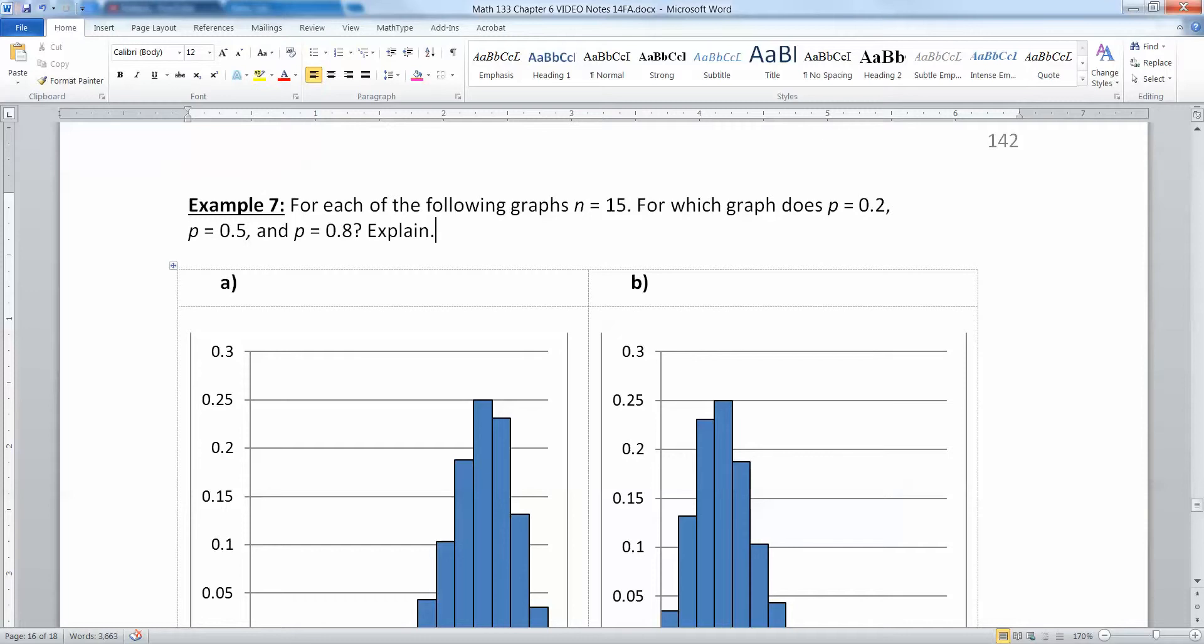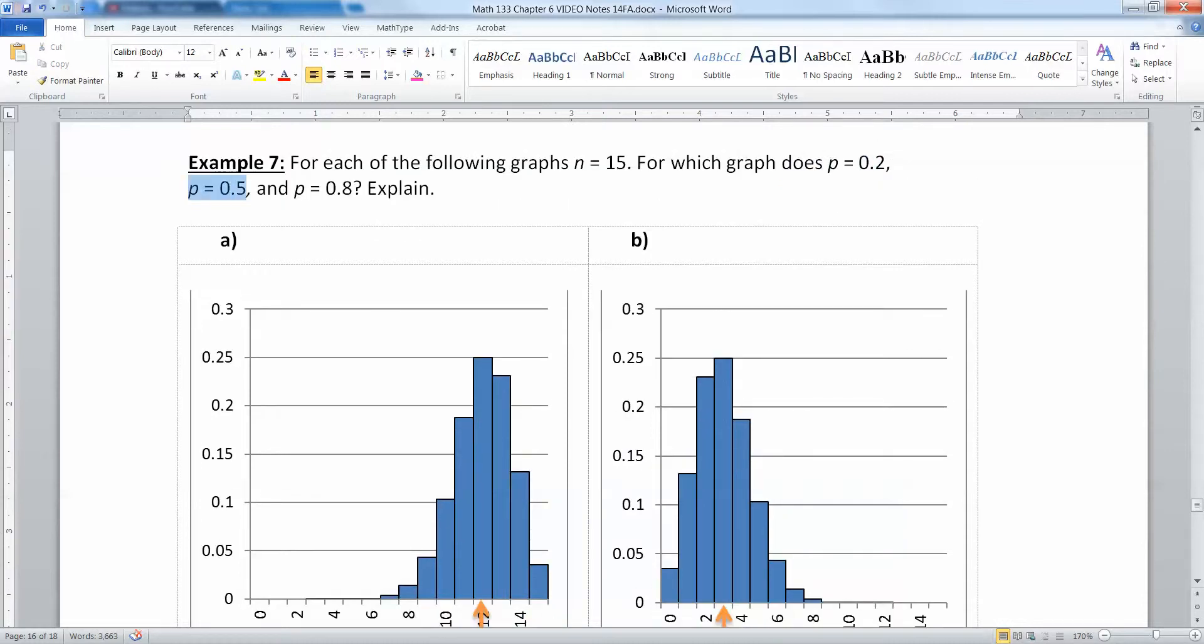So the first thing I want us to think about is that if n equals 15, which graph represents p values of 0.2, p being your probability of success, p being 0.5 or p being 0.8 and explain.